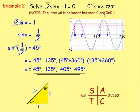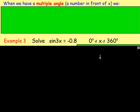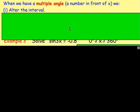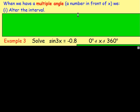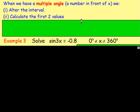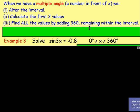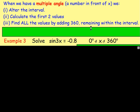Now let's try a multiple angle question. If you were asked to solve sin(3x) equals negative 0.8, I've split it into a few steps. First, if you don't have sin(x), cos(x), or tan(x) — but instead have a multiple like 3x — you have to change your interval. After that, calculate the first two values using CAST as usual. Then, similar to the last example, find all values by adding 360 degrees, remaining within your new interval. Finally, divide all your answers so you're left with x equals.